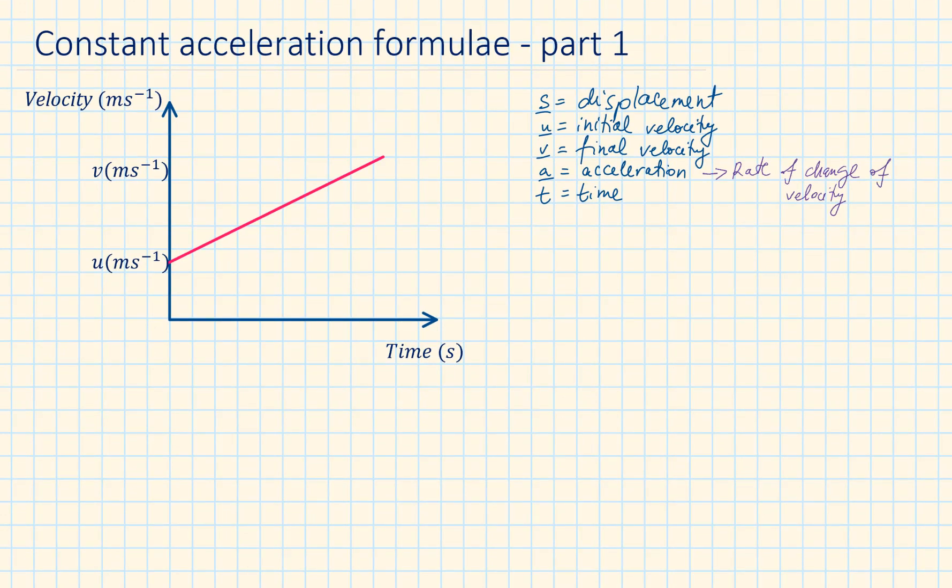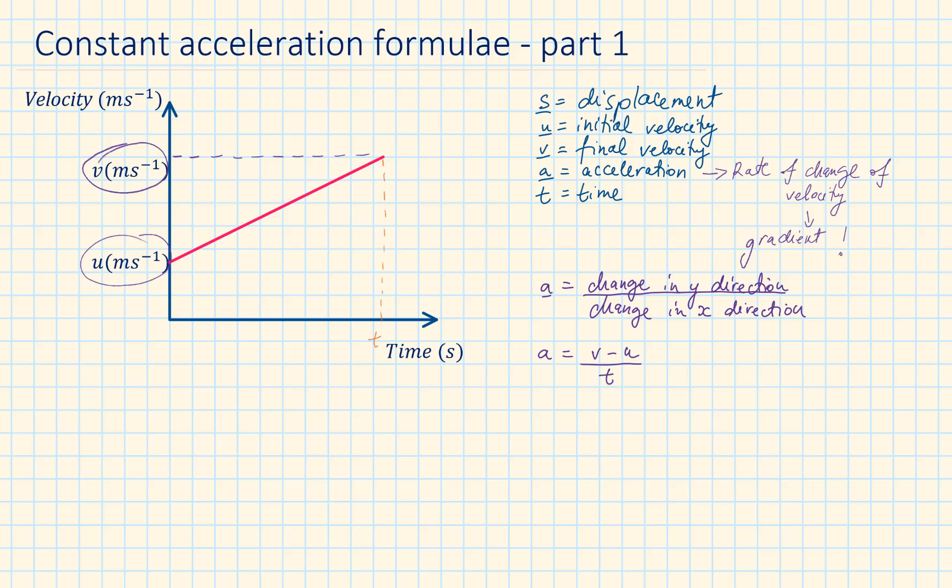The acceleration is the rate of change of velocity. So the gradient of a line in a velocity time graph is representing the acceleration. To calculate the gradient we need the change in the y direction over the change in the x direction. If U represents the initial velocity and V the final velocity, our gradient, or the formula for the acceleration, will become V minus U over T. Making V the subject of this formula results in one of the SUVAT equations: V equals U plus AT.